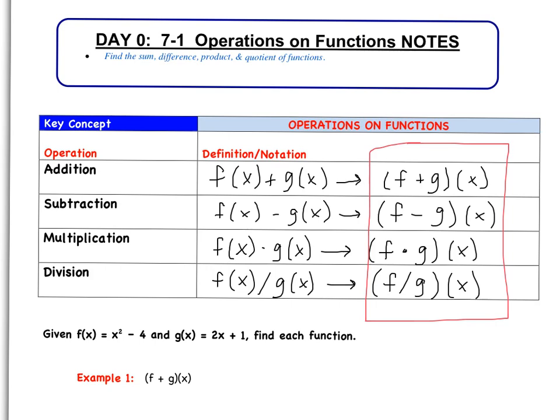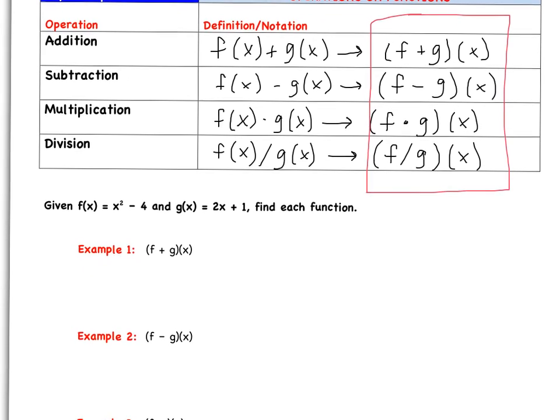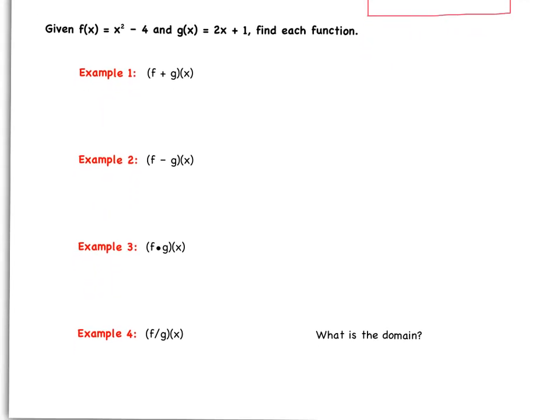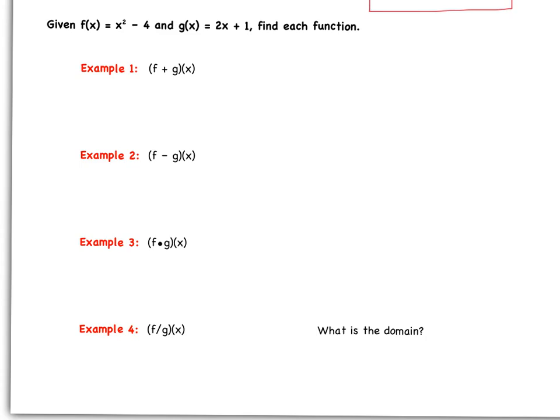So let's go ahead down below and try out a few examples. So our first example, let's take a look at our two functions. Given f(x) = x² - 4 and g(x) = 2x + 1, we're going to find each of the following. So the first one is (f + g)(x). Just to keep in mind, whenever we're plugging things in, let's use parentheses. So we've got function f plus function g. So let's go ahead and plug these in. So x² - 4 plus 2x + 1.